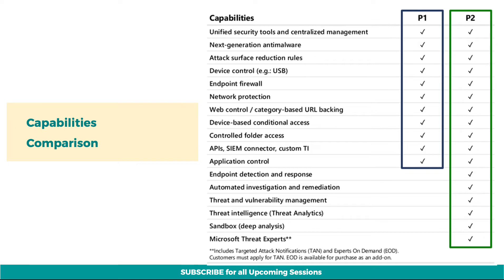Plan 2 also provides sandbox deep analysis capabilities, including Microsoft's Secure Score for devices, to help dynamically assess the security state of your enterprise network, identify unprotected systems, and take recommended actions to improve the overall security of your organization. Lastly, Plan 2 also includes Microsoft's managed threat hunting service, which provides proactive hunting, prioritization, and additional context and insights that further empower security operation centers to identify and respond to threats quickly and accurately.